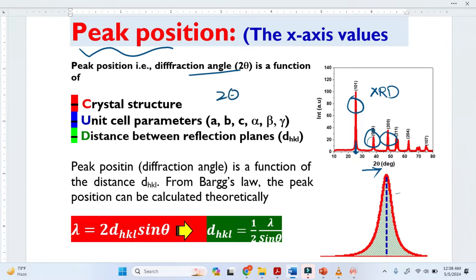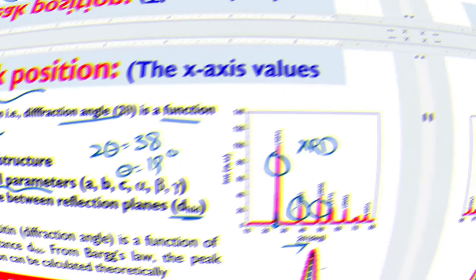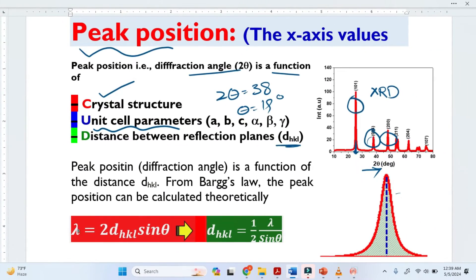So in this case, the 2θ is basically 38 and therefore θ is basically 19 degrees. The peak position is a function of the crystal structure — this peak position is directly related to the crystal structure. By default, the peak position is a function of lattice parameters and also a function of the interplanar spacing between the planes. This is the fundamental Bragg's equation. We know the x-ray wavelength, which is 1.5 angstroms, and θ we know from the data, so we can easily calculate the interplanar spacing D from Bragg's equation.